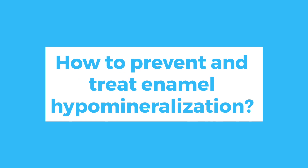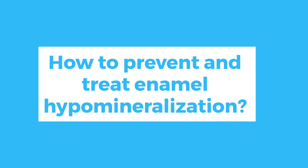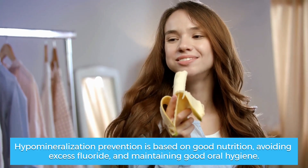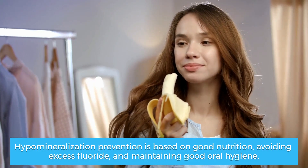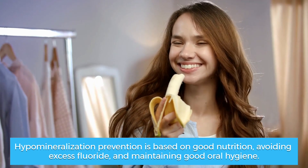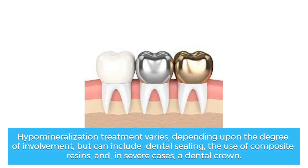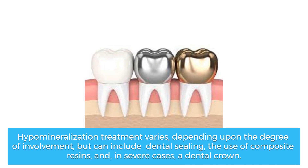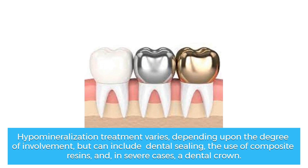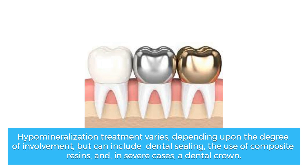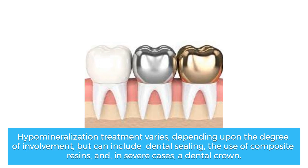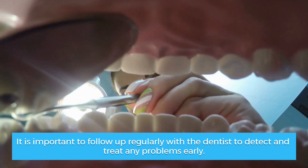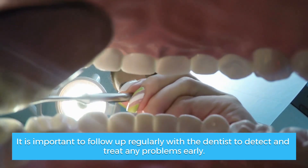How to prevent and treat enamel hypomineralization? Prevention is based on good nutrition, avoiding excess fluoride, and maintaining good oral hygiene. Treatment varies depending upon the degree of involvement, but can include dental sealing, the use of composite resins, and, in severe cases, a dental crown. It is important to follow up regularly with the dentist to detect and treat any problems early.